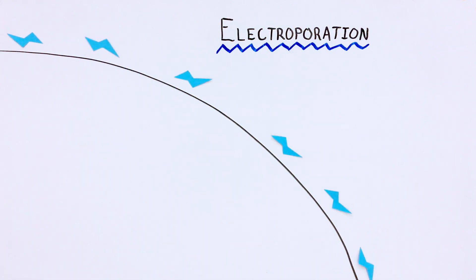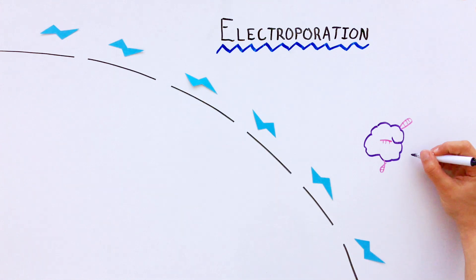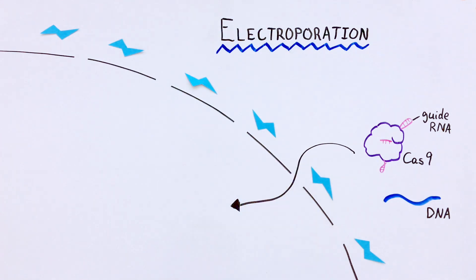This technique shocks the cells using an electric field, which opens pores in the membrane. Roth is then able to introduce the genome editing molecule Cas9 along with healthy replacement DNA to reprogram the T-cell.